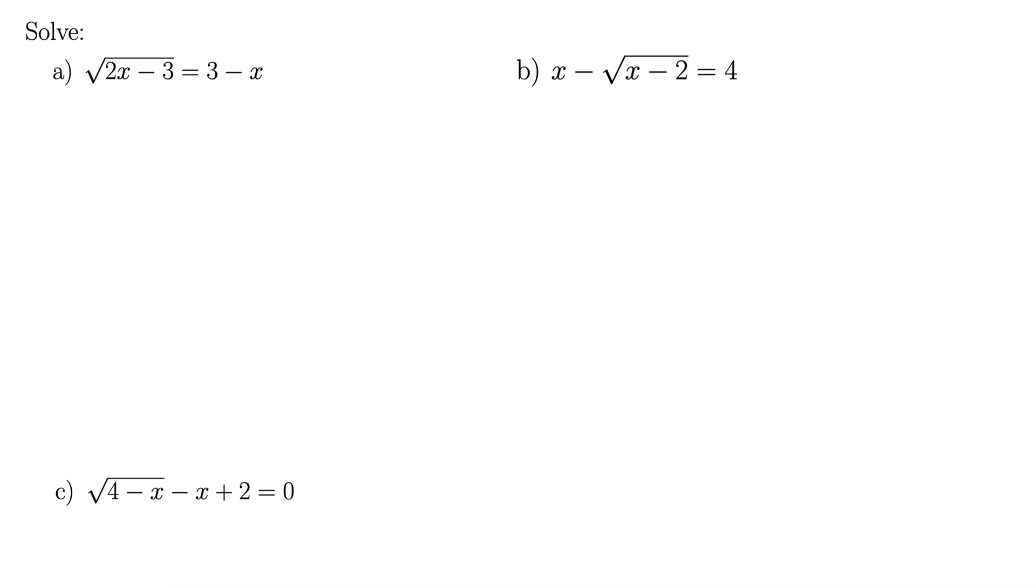To get rid of the square root we need to square both sides. Right, square both sides like so. This gives us 2x minus 3 on the left equals 9 minus 6x plus x squared. Now you may be asking why not just 9 minus x squared here? Well there's a rule when you're squaring a binomial. Anytime you have quantity a minus b squared, that equals a squared minus 2ab plus b squared.